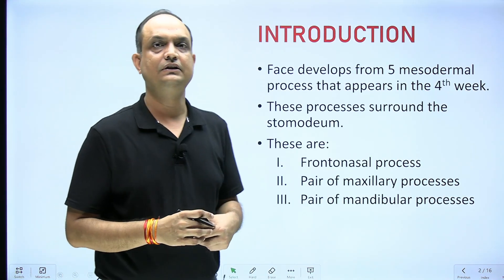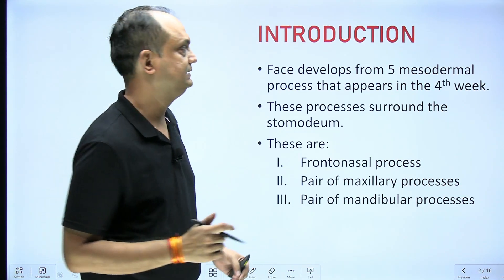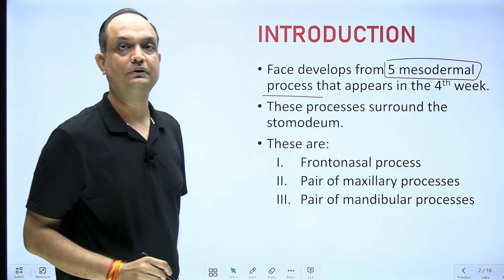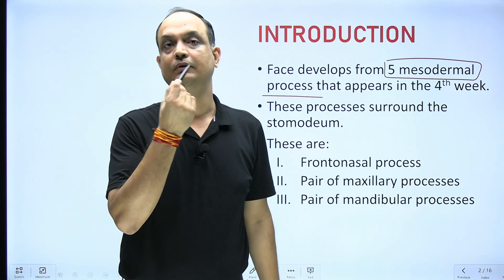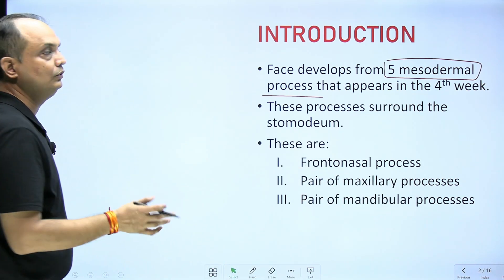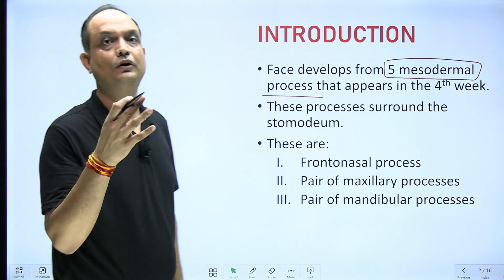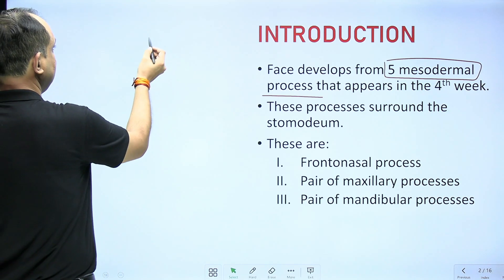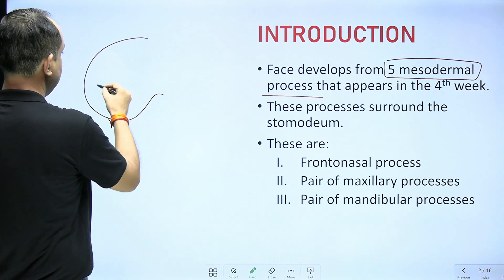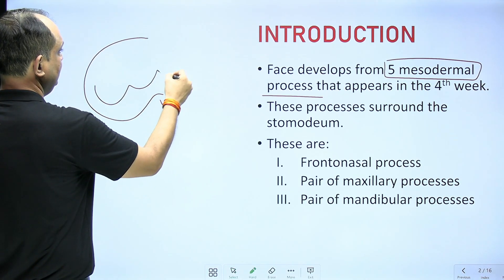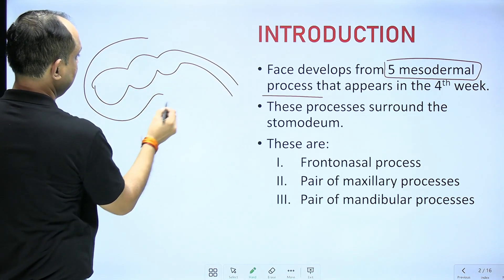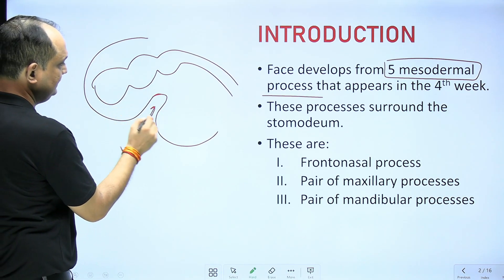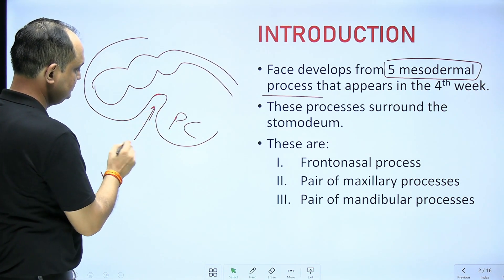When you see the development of the face, the first and most important thing is that there are five mesodermal processes, and these processes appear in the fourth week around the developing oral cavity. The oral cavity is formed when there is a formation of the head fold, or cranial folding. When the folding is taking place, you have the development of four brain vesicles. There is a surface depression seen between the brain vesicle and the pericardial region, and this is known as the stomodium.